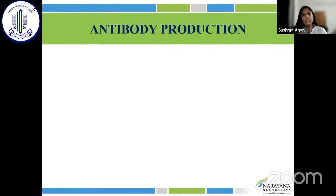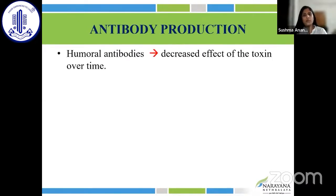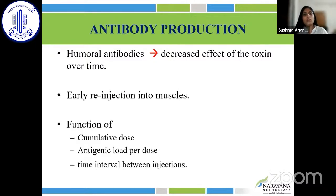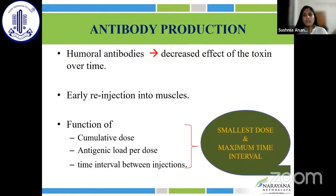Humoral antibodies are produced against botulinum toxin, decreasing its effectiveness over time. Early reinjection into muscles is also known to increase resistance, which is a function of the cumulative dose, the antigenic load per dose, and the time interval between injections. It is always prudent to start with the smallest dose and maintain the maximum time interval between injections, thereby making resistance least likely.